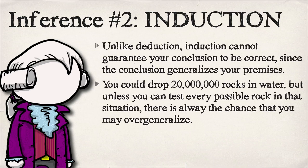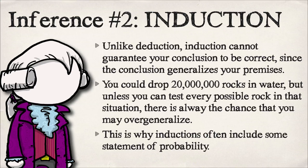Unlike deduction, induction cannot guarantee that your conclusion is correct because you're always overstepping your data. For instance, you could drop 20 million rocks into the water, but unless you test every possible rock, there's always a chance you'll find a rock that would float — like pumice. That's why inductions are often stated in terms of some kind of probability; there could still be something out there that isn't within your inductive conclusion.